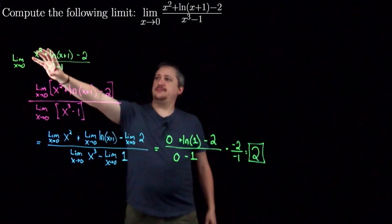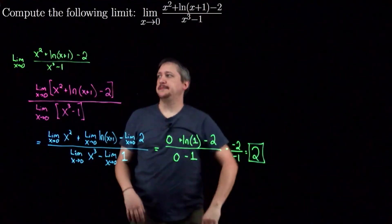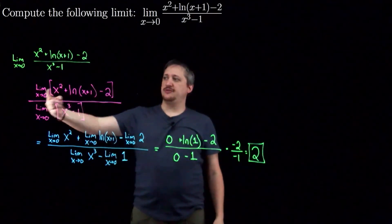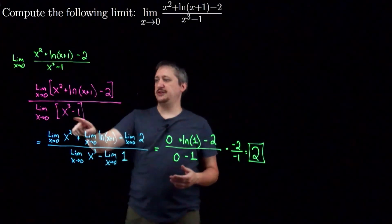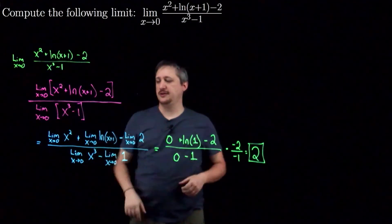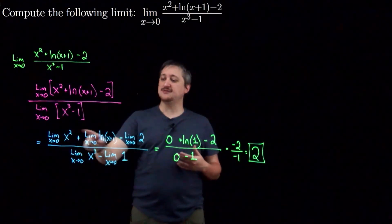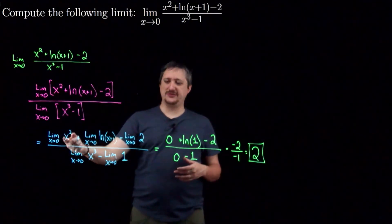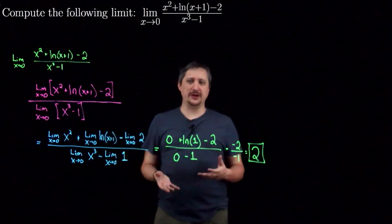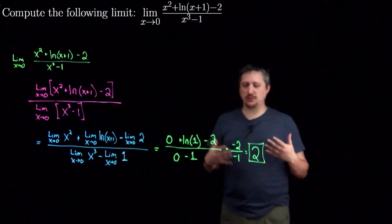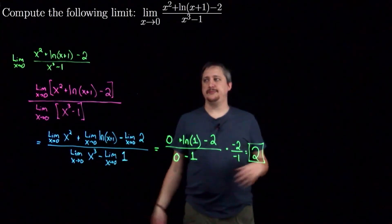Natural log of 1 is zero — that's asking e to what power equals 1, and the answer is 0 since e to the 0 is 1. So I get zero plus zero minus two on top, which is negative 2, over zero minus 1, which is negative 1. That gives negative 2 over negative 1, which is just 2. To summarize: I first split the limit over top and bottom (after confirming the bottom wasn't zero), then split each piece across addition and subtraction (after a quick check on natural log), then evaluated each piece and simplified.